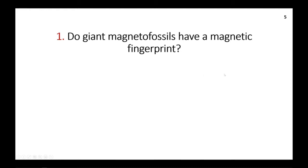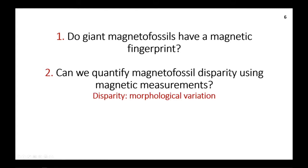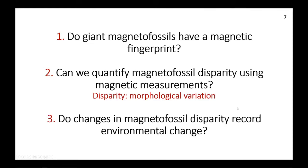One outstanding question about giant magnetofossils is whether they have a magnetic fingerprint so we can more easily find them in bulk sediments and see what kind of environmental change they can tell us about. This brings us to our three questions: first, do giant magnetofossils have a magnetic fingerprint that can help us identify them more easily using non-destructive techniques? Second, if they have a magnetic signature, can we quantify differences in magnetofossil disparity — changes in the relative morphospace, or shapes and sizes of magnetofossils, using magnetic measurements? Third, do changes in magnetofossil disparity record environmental change?